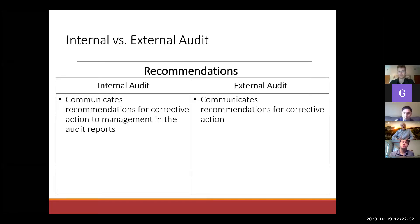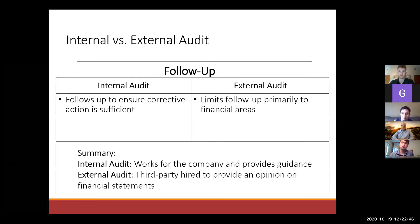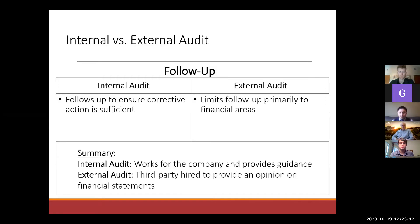Once an auditor is done with their fieldwork, they're not really done — the next part is communicating recommendations for corrective action. External auditors make recommendations, but the follow-up is less of a priority and is usually left to the organization during normal operations. Internal auditors follow up to ensure corrective action is sufficient. In summary: internal auditors work for the company and provide guidance, while external audit is a third-party hired to provide an opinion on financial statements.